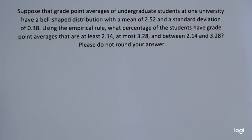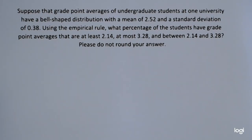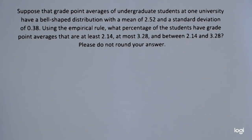In this video, I'm going to use the empirical rule. Suppose that grade point averages of undergraduate students at one university have a bell-shaped distribution with a mean of 2.52 and a standard deviation of 0.38.